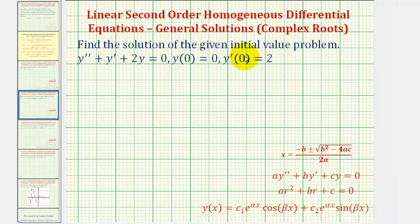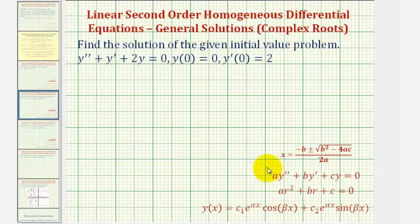We want to find the solution to the given initial value problem. The first thing we should recognize about the differential equation is that it's a linear, second-order, homogeneous differential equation with constant coefficients, which means the differential equation fits this form here, where a, b, and c are the constants. Therefore we can find the general solution using a characteristic equation given here.